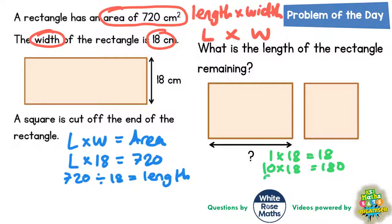If we double that, 20 lots of 18 would be double 180. Well double 18 is 36, so 20 lots of 18 must be 360.